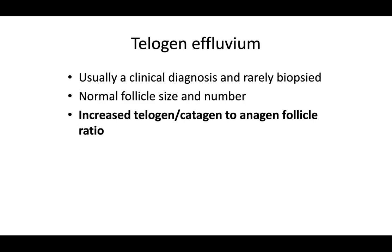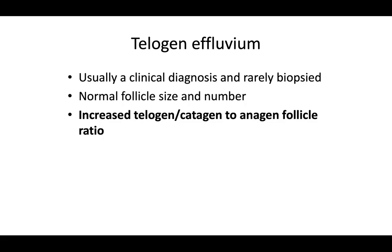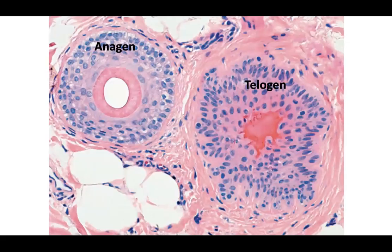In telogen effluvium, you'll see normal follicle size with preservation of total terminal hair follicle numbers, since it's not a scarring alopecia. However, there's an increase in the telogen-to-catagen presence compared to anagen follicles — an increased ratio, or equivalently, a decreased anagen-to-telogen ratio. It's just a shift.